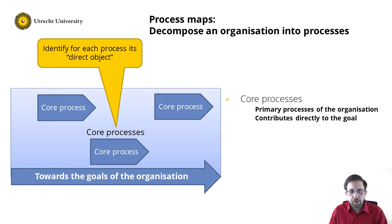As a modeling convention, we position the processes in the canvas in an order. Processes closer to the left are closer to providers or suppliers, whereas processes more on the right are closer to the consumers and thus add more value to the organization.